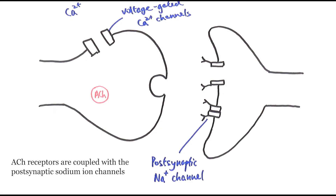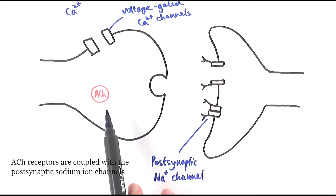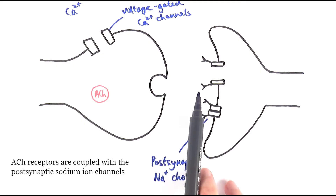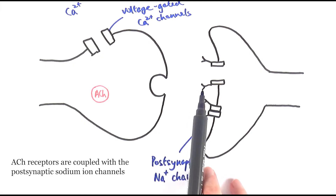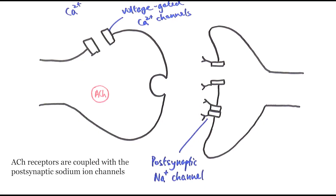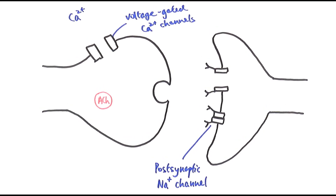These receptors are coupled with the protein channels and they are specific to acetylcholine. Once acetylcholine diffuses across the synapse and binds with these receptors, the channels open up. This is the basic structure of the cholinergic synapse.